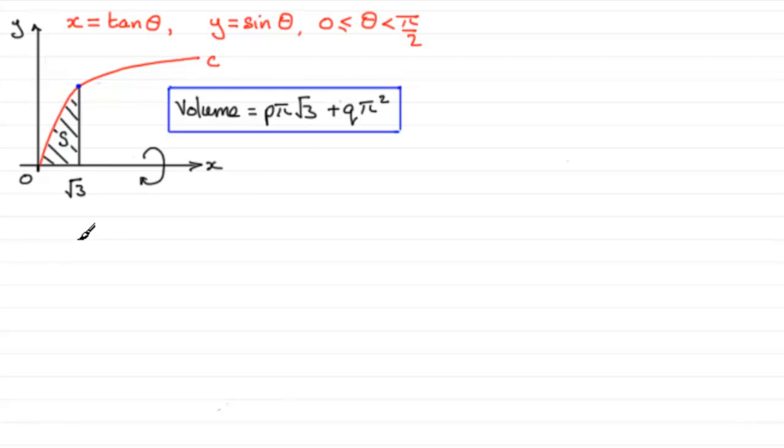So to do something like this, how do we work out that volume? Well we should be familiar with volumes of revolution. The volume of revolution about the x-axis is given by pi times the integral of y squared with respect to x, with the limits being x limits. And they will go from 0 to root 3 in this particular example.